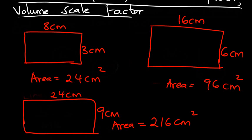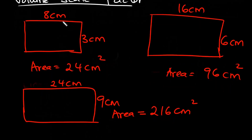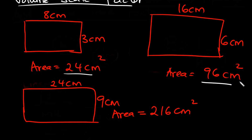The area of that rectangle is 24 × 9 = 216 cm². So what is happening here? For the first rectangle, we multiplied the lengths by 2 and got 16 cm by 6 cm. The area was 24 cm², and after we multiplied the lengths by 2, the area became 96 cm². That means the area was multiplied by 4, because 24 × 4 = 96. So when the lengths were multiplied by 2, the area was multiplied by 4.